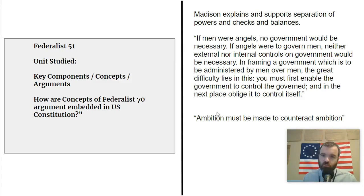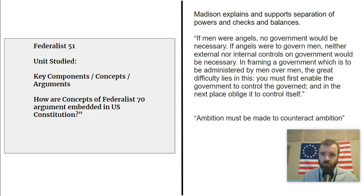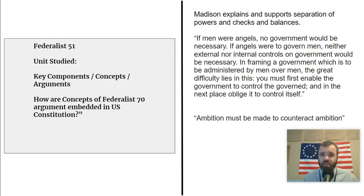Another key quote is: 'Ambition must be made to counteract ambition.' You hear politicians say this all the time when Congress is getting upset about something the president is doing — congressmen and women use this quote to say we must be able to limit the powers of the other branches. That's at the core of our political system. Sometimes it functions well, sometimes it doesn't, and that's something we talk about throughout the whole course. This is philosophically at the bedrock of the American political system, and Madison discusses it in Federalist 51.